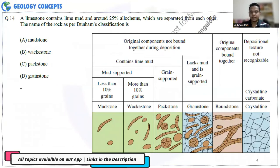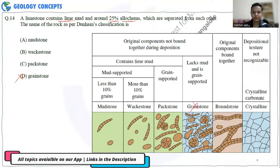The next question is again from Dunham's classification of limestone. A limestone that contains lime mud and around 25% allochems (external components such as intraclasts, fossil remains, and peloids) cannot be a grainstone. Since it contains lime mud and more than 10% grains, it must be a wackestone. So the correct answer is wackestone.